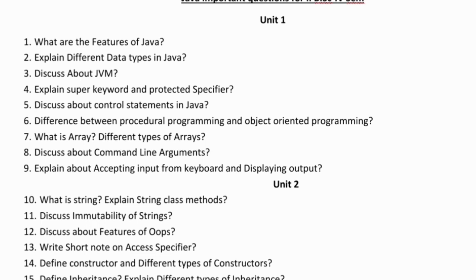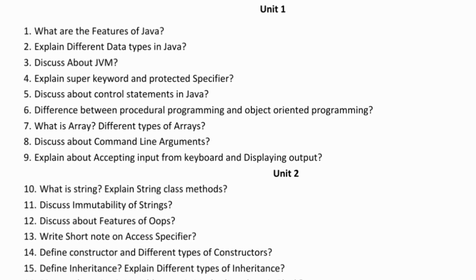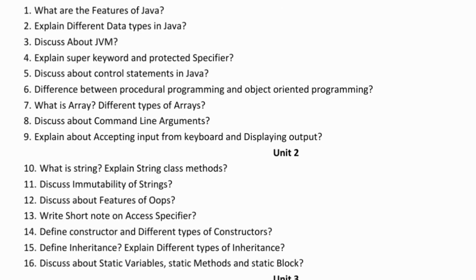Third question: discuss about JVM — JVM stands for Java Virtual Machine. Fourth question: explain the super keyword and protected specifier. Fifth question: discuss about control statements in Java — those are decision making statements, looping statements, and switch statements. Sixth question: difference between procedural programming and object oriented programming.